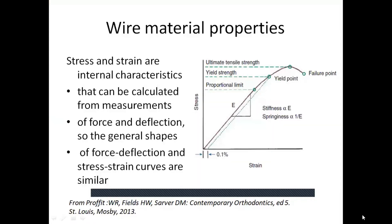Orthodontic tooth movement is achieved by forces exerted on the tooth by an arch wire via a bracket during orthodontic treatment. The force transmitted to a tooth depends on the physical and mechanical properties of the wire used and the relationship between the bracket and wire. The two bracket slot sizes most commonly used are 0.018×0.025 inch and 0.022×0.028 inches.